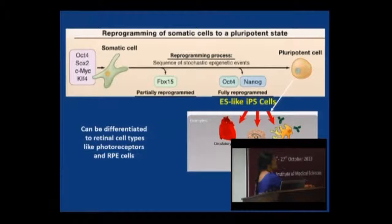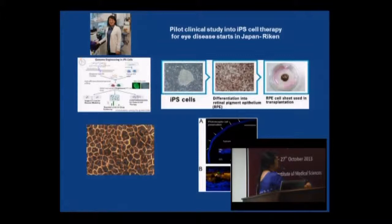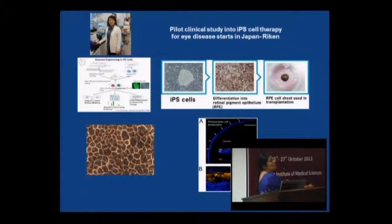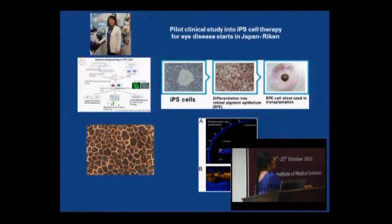IPS cells — is it a myth? Masayo Takahashi from Riken, one of the most promising institutes in Japan, has published a first pilot clinical trial using IPS for eye diseases. It's no longer just academic interest. The reprogramming has come from four genes down to two or one, from viral to non-viral methods and now almost through peptide induction, reducing complications of IPS. She is now transplanting RPE derived from IPS into patients.